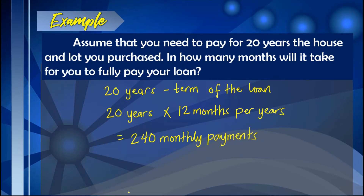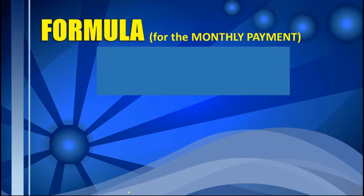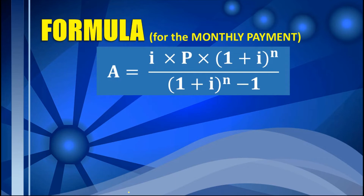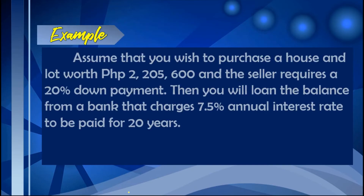How much is the monthly payment? To solve for the monthly payment, we need to follow this formula, where: A refers to the monthly payment, P is the loan's initial amount, I is the monthly interest rate, and N is the total number of payments or the term of the loan.